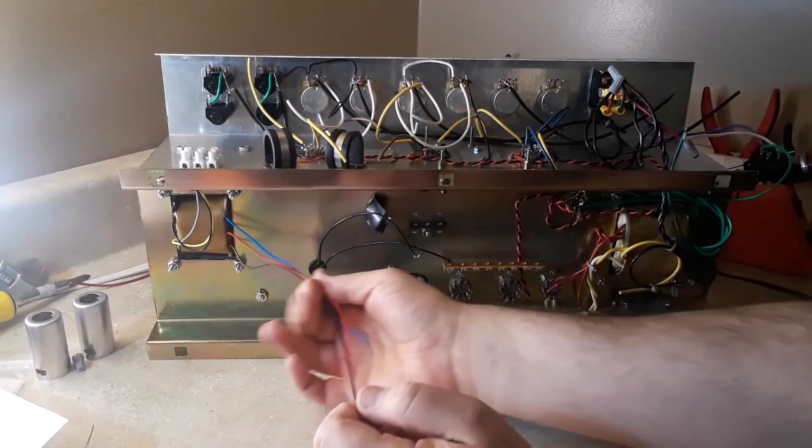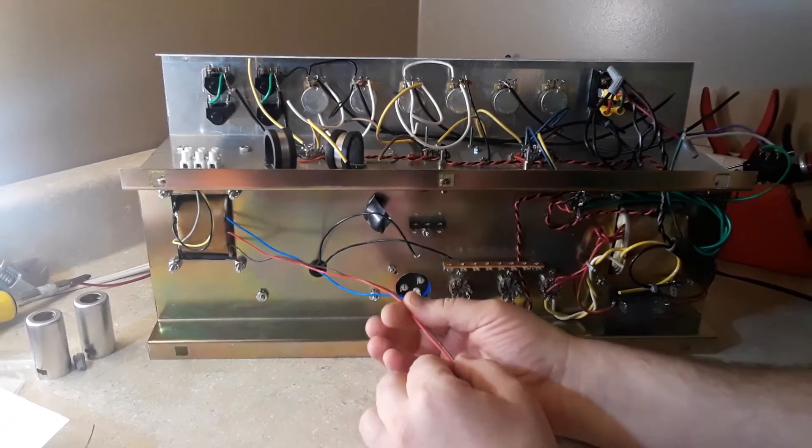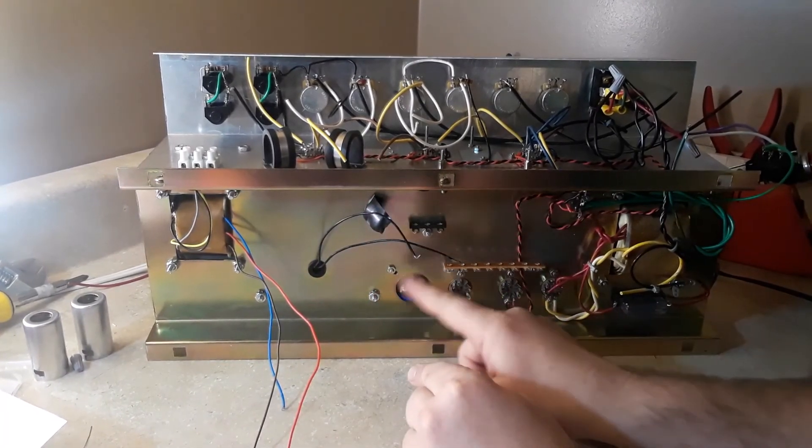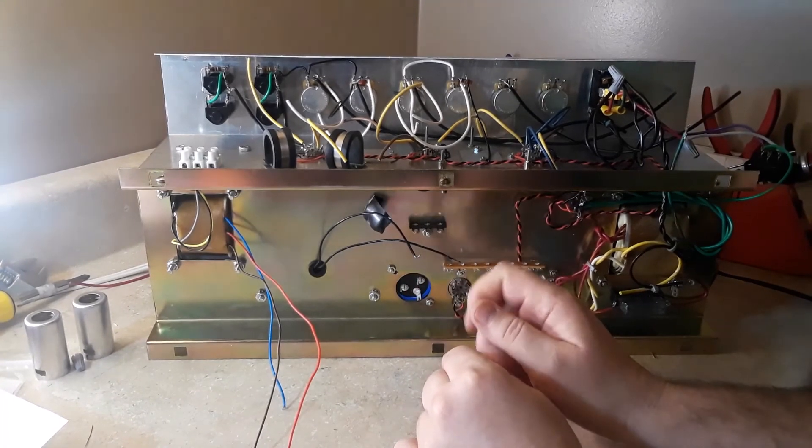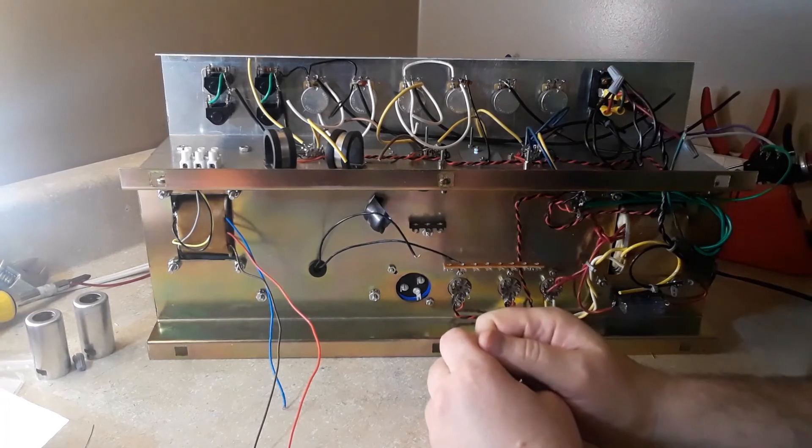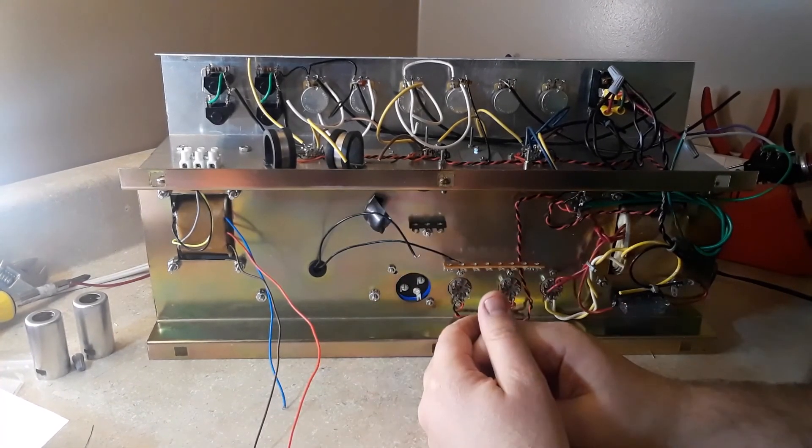Bring my wires from the primary on the output transformer over to the power tubes, wire up this capacitor here, and then at that point I'll probably drop in the tag boards and get the DC power set up, and then it'll almost be ready to go.